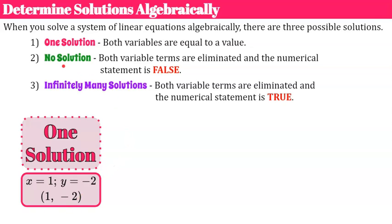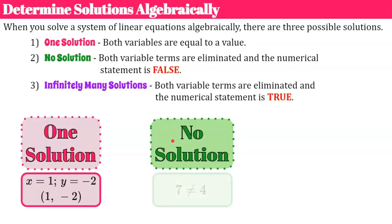The second type, when solving algebraically, is no solution. That is when both variable terms are eliminated and the numerical statement is false. You would solve, x and y would go away, and you'd end up with something like 7 doesn't equal 4. You'd end up with your own false numerical statement, meaning there are no values for x and y that make the system true. When you graph it, the lines are parallel.